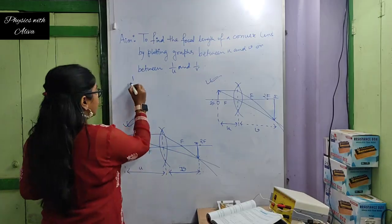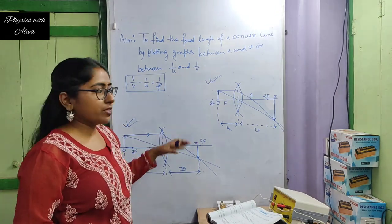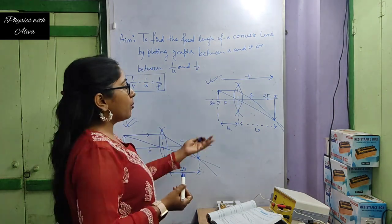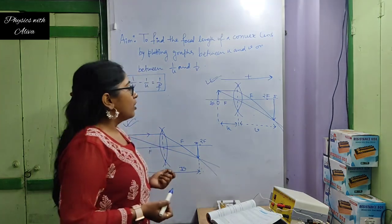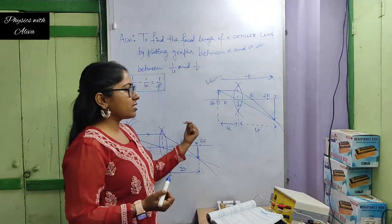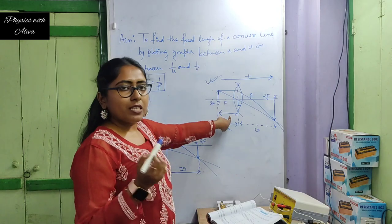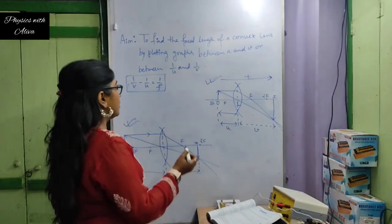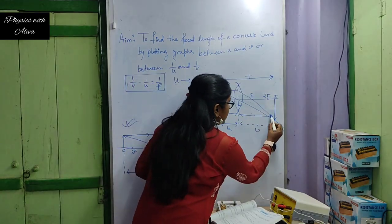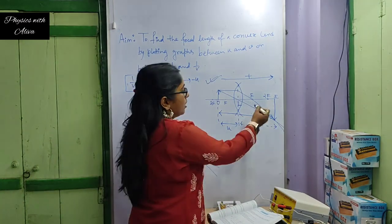The lens formula is 1/v − 1/u = 1/f. We need to apply the sign convention: moving in the direction of incident light is positive; moving opposite to incident light is negative. We measure both object and image distances from the lens. When measuring the object distance, we move opposite to the incident light, so u is negative. When measuring the image distance, we move in the direction of incident light, so v is positive.